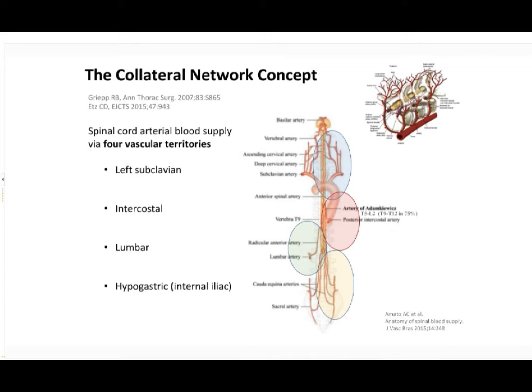It is worthwhile to go back to the concept of Randall Grip from Mount Sinai. He invented the collateral network concept of spinal cord perfusion, which has vastly improved our understanding of how perioperative SCI develops. Here is the artery of Adamkiewicz — a variable size feeder of the anterior spinal artery from the thoracolumbar region. It is a player here, but not alone. It is just one major contributor among many sources of spinal cord blood supply, which occurs via four vascular territories: the left subclavian, the intercostal, the lumbar blood supply area, and the hypogastric or internal iliac supply area.